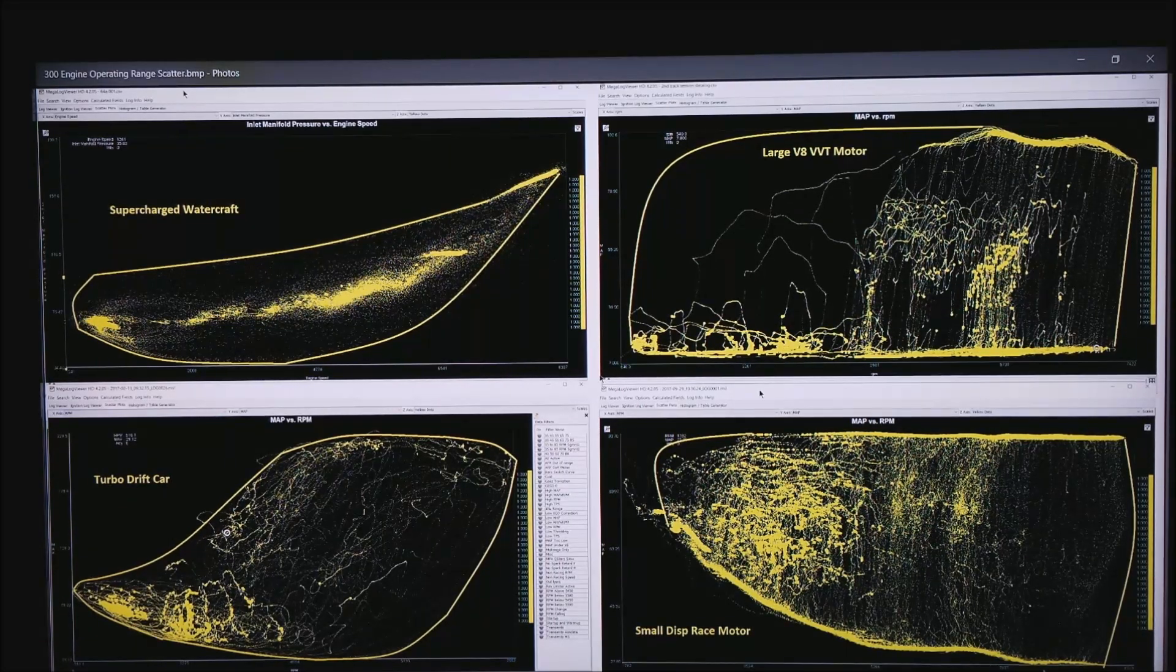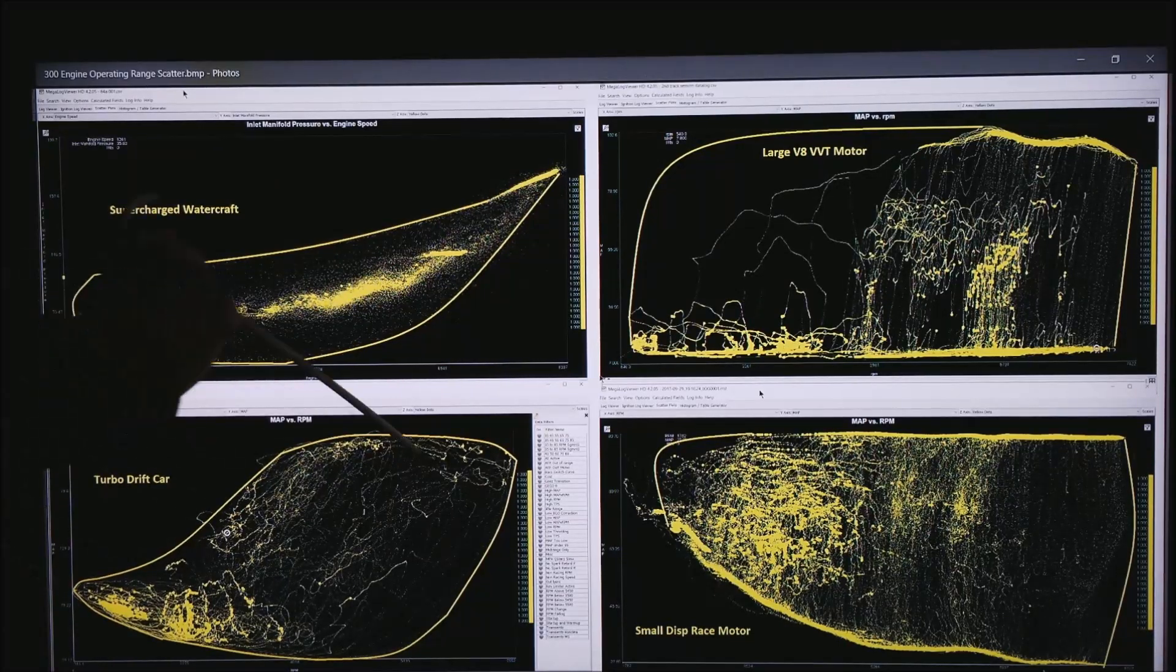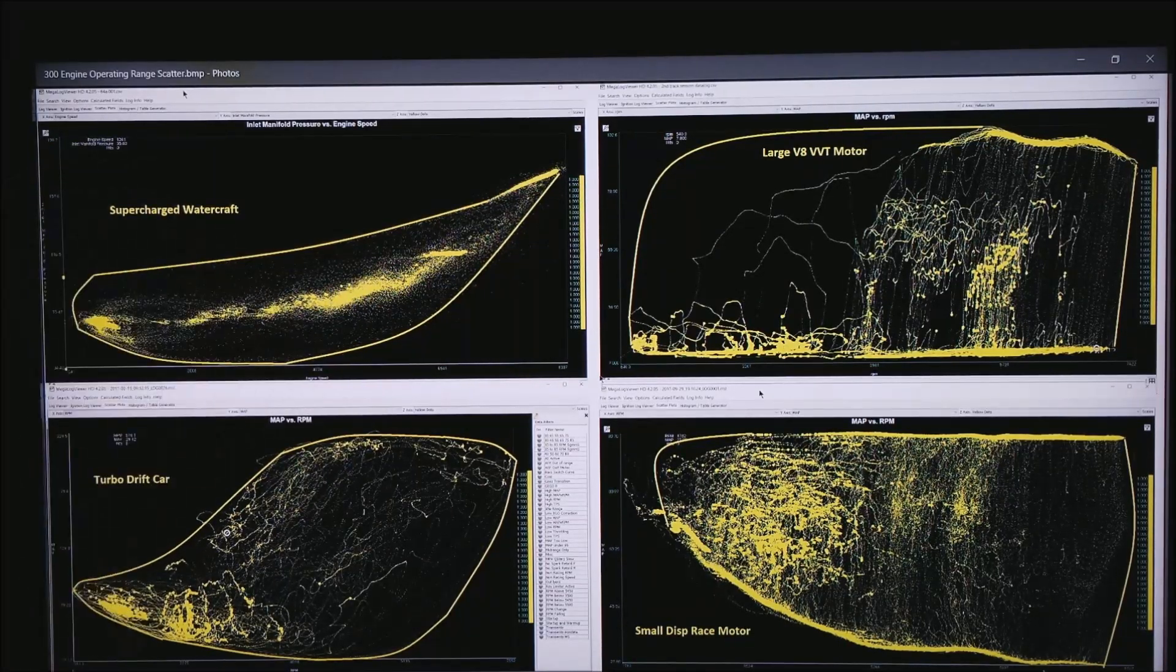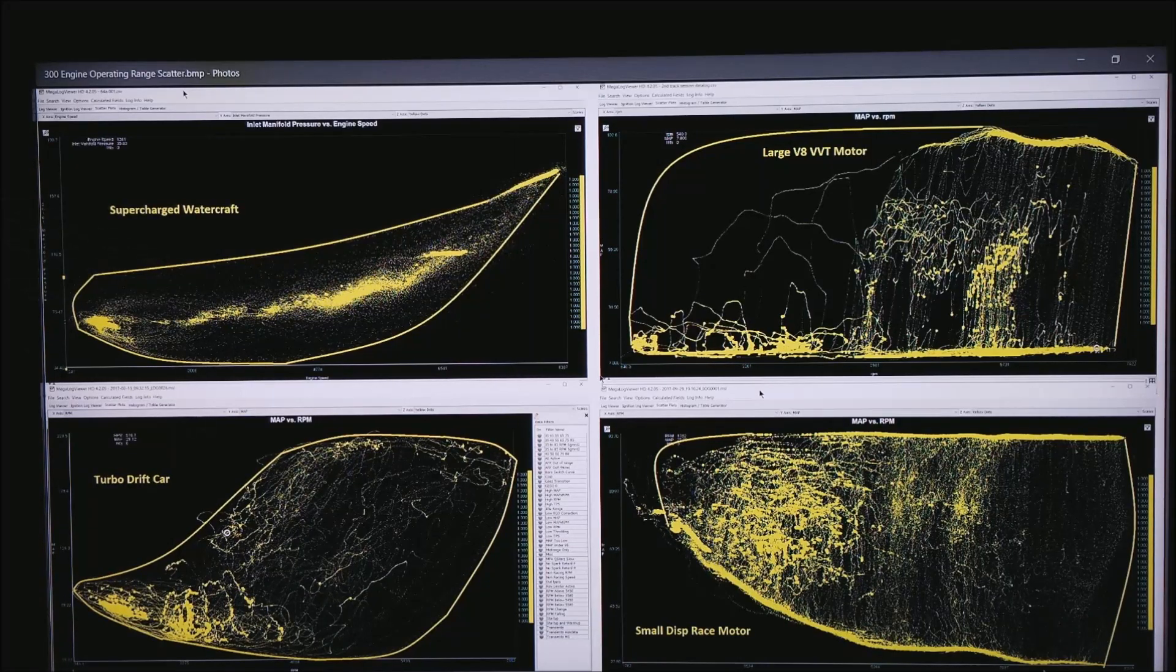On the lower left is the same turbo drift car and notice how this envelope or footprint is very different than the supercharged jet ski.